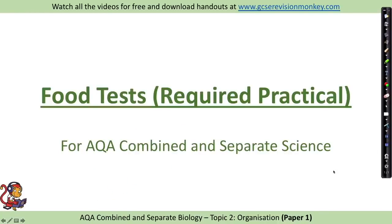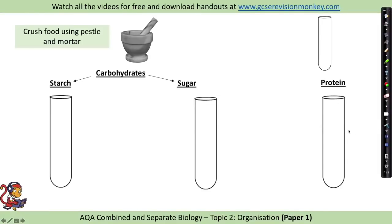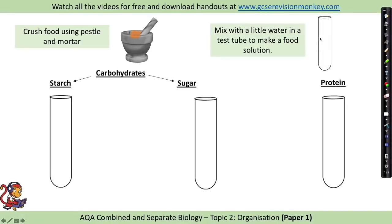Food tests required practical. There are three food tests you need to be aware of. Your revision guide may mention a test for fats using Sudan-3, but because that's quite a nasty chemical it has been removed from the required practical — so you should only be asked on carbohydrates (which split into complex carbohydrates like starch and simple carbohydrates like sugar) and protein. First you need to prepare your food sample by crushing it using a pestle and mortar, then mixing it with a little water in a test tube or boiling tube to make a food solution.